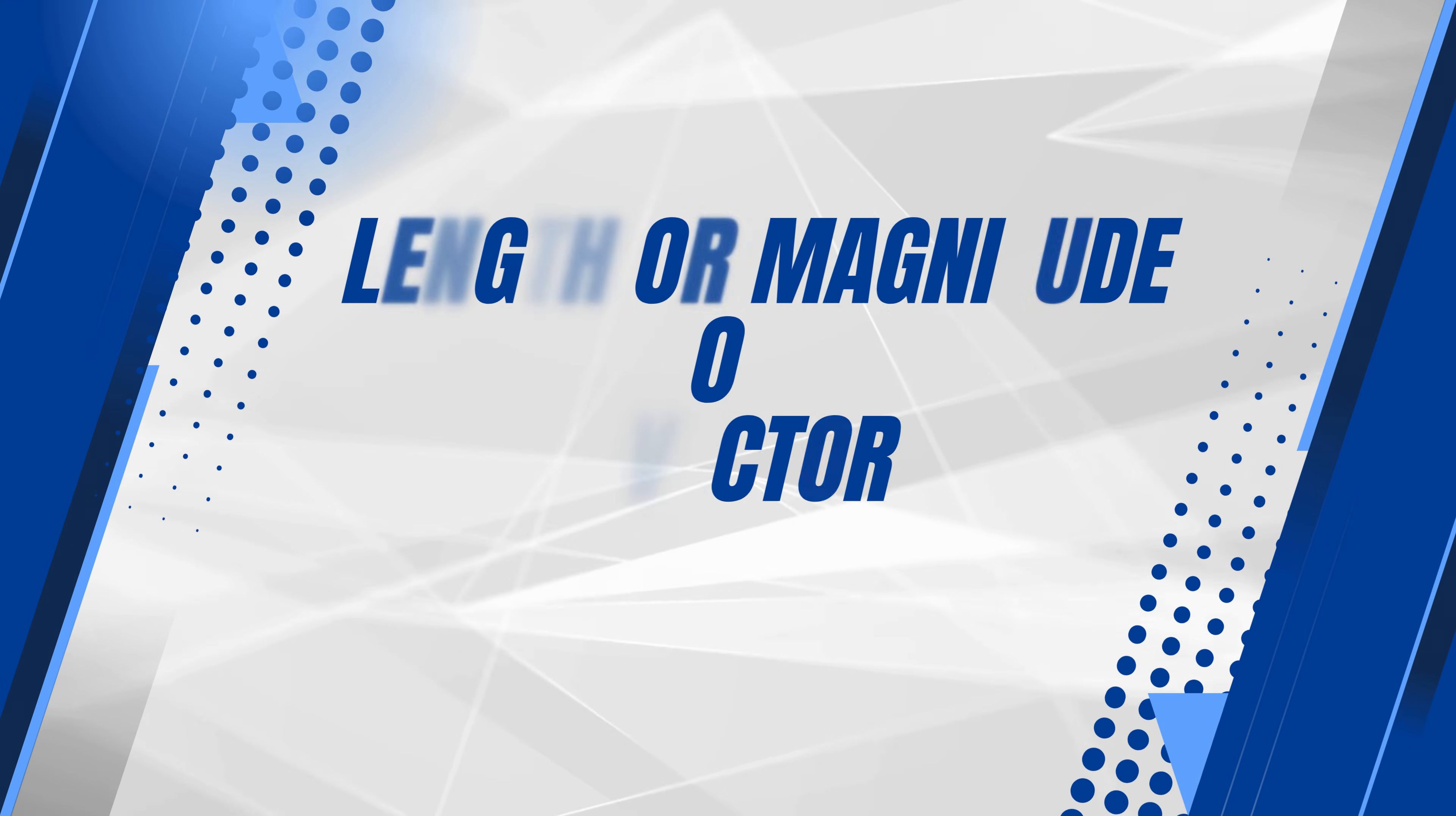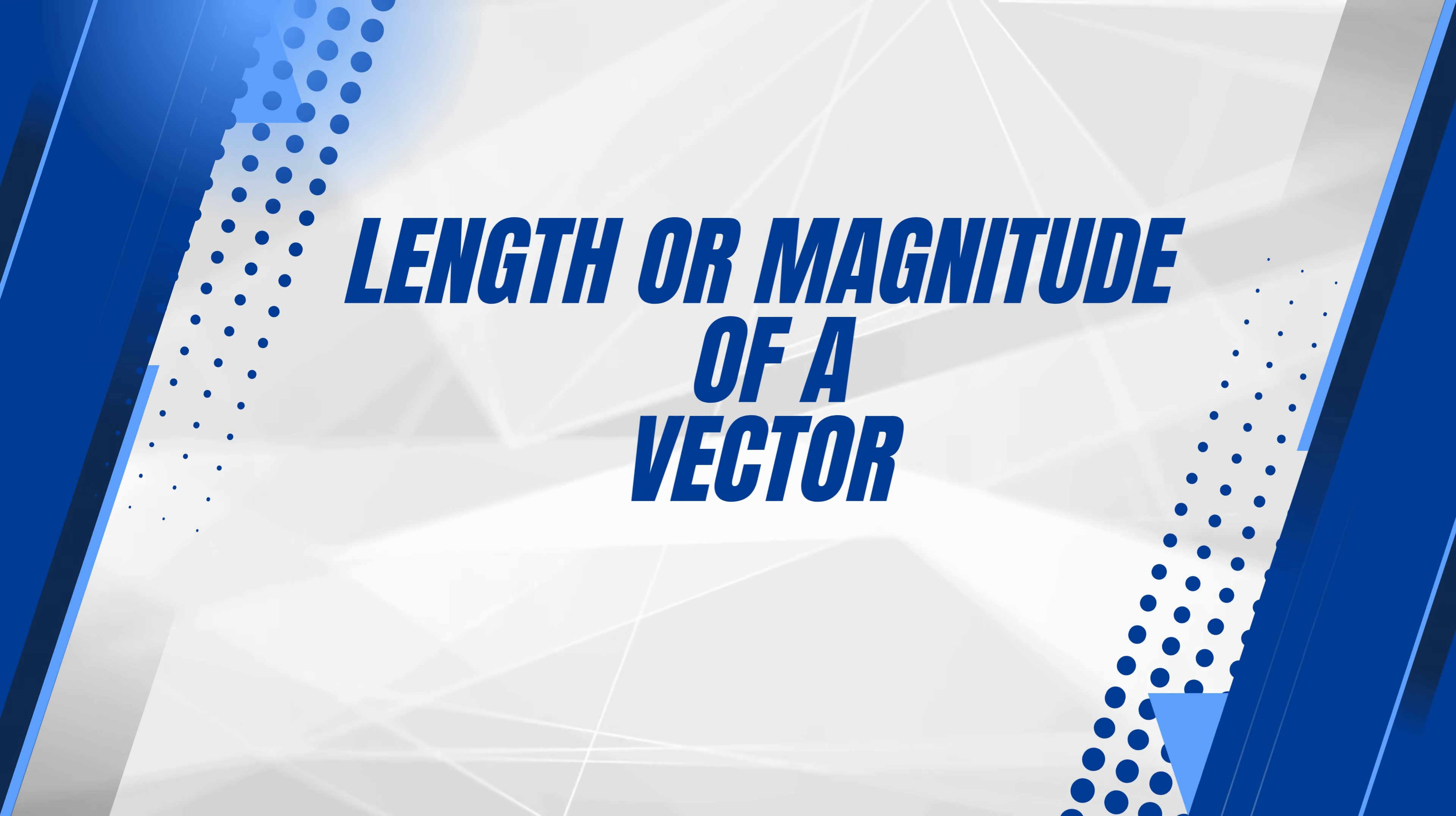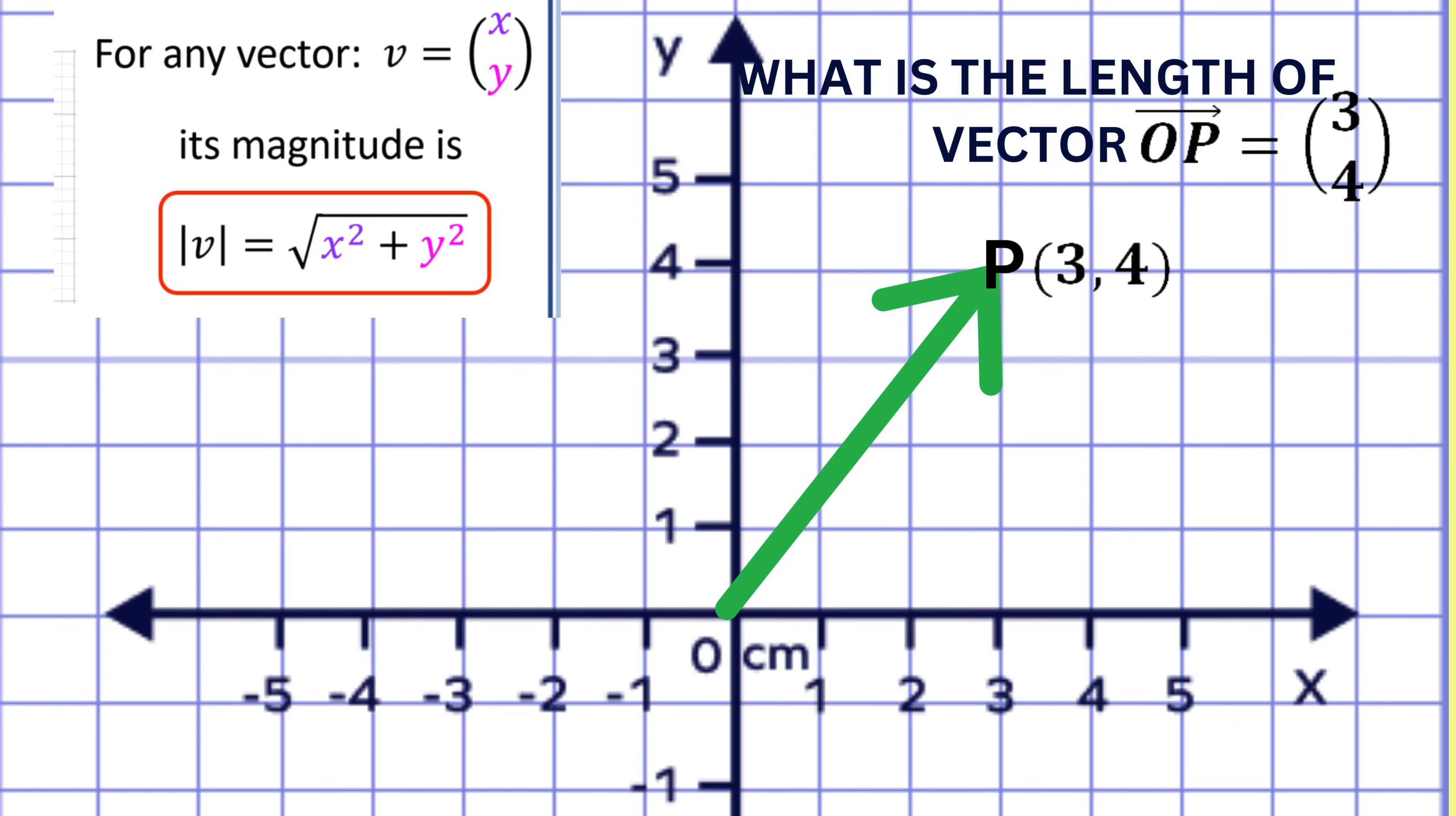To find the length or magnitude of a vector, we can use the formula on the screen. We substitute 3 and 4 for x and y, respectively. Note the symbol used to represent the length of the vector. In the end, the magnitude is 5 units.